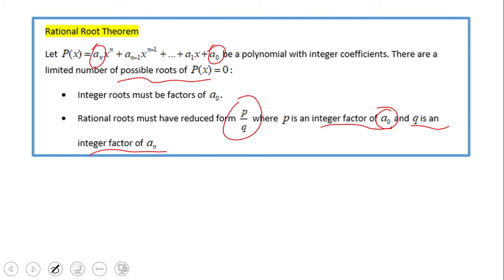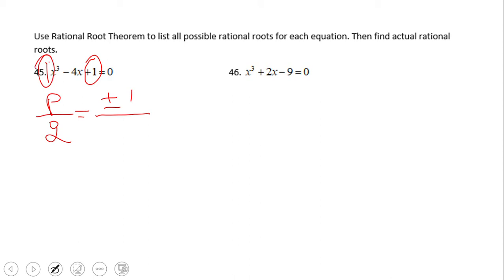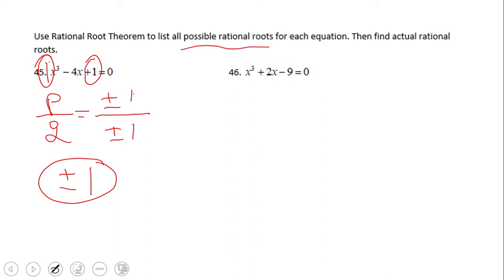Let's see an example of how this works. We're going to do that P over Q, and on top we're going to put the factors of 1, which are plus and minus 1, and on the denominator we're going to put the factors of 1 also — plus and minus 1. The possible combinations give us positive one over positive one, which is 1, and positive one over negative one, which is negative 1. So the only two possible rational roots are positive 1 and negative 1.